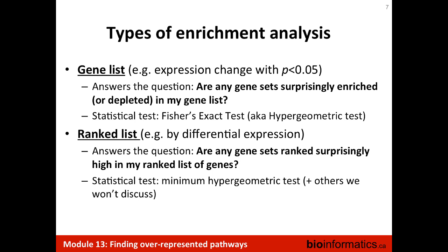In the case of a ranked list — which is sometimes recommended because ranked lists have more information for pathway enrichment analysis — you would expand your Fisher's exact test to a gene ranking rather than a flat gene list. In this case, you would answer the question: are any gene sets ranked surprisingly high in my list of genes? In other words, are the pathway genes appearing very high in the list? The genes in the list will be ranked according to some decreasing significance, and the question is whether pathway genes generally have higher scores in your input list. The statistical test here is the minimum hypergeometric test.